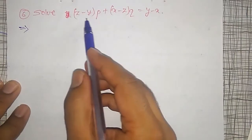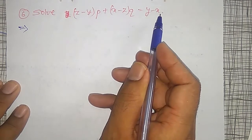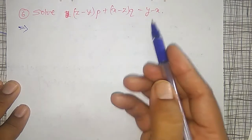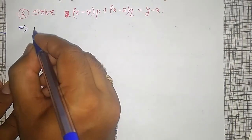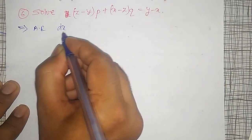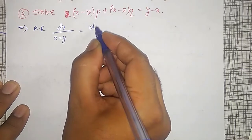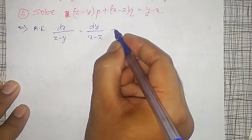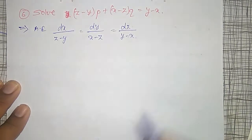Now one more example: solve (Y - Z)P + (X - Z)Q = Y - X. The auxiliary equation is dx divided by (Z - Y), dy divided by (X - Z), and dz divided by (Y - X).